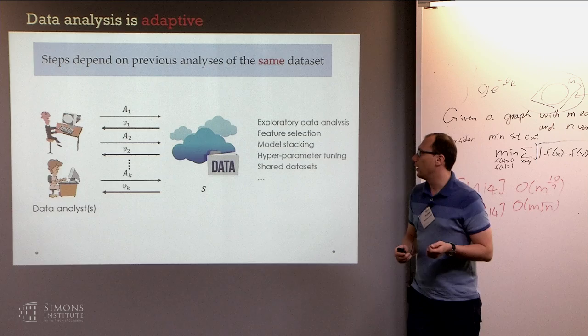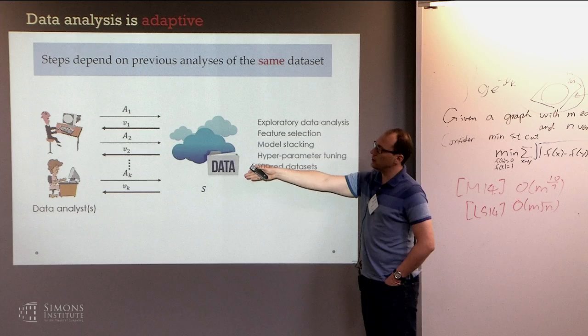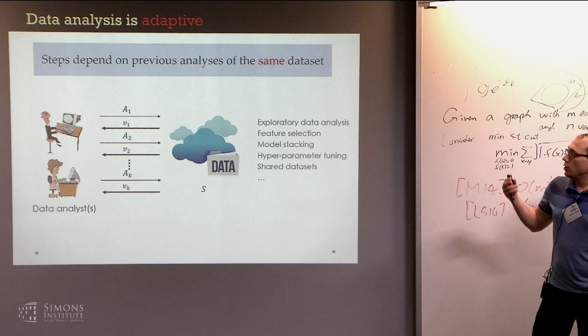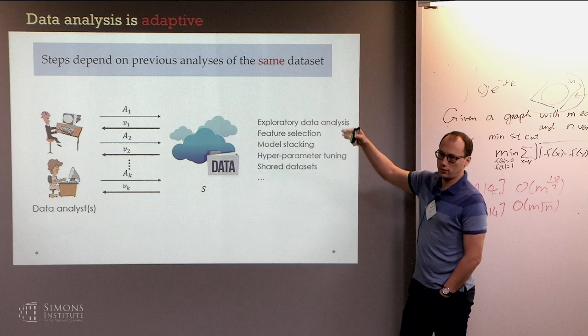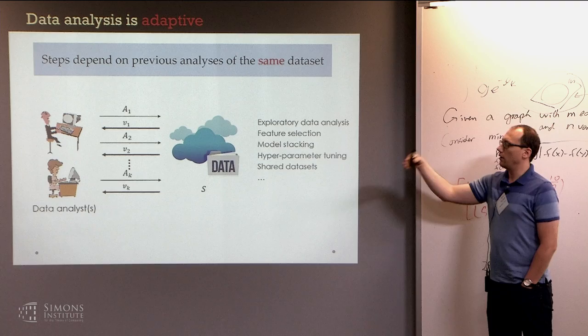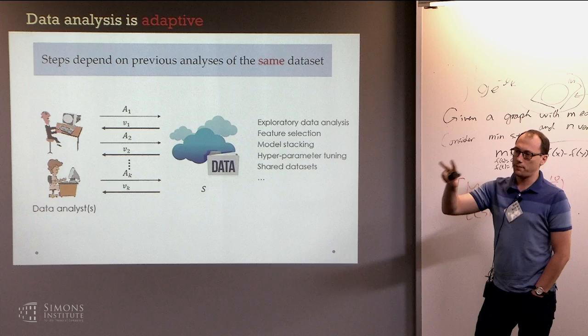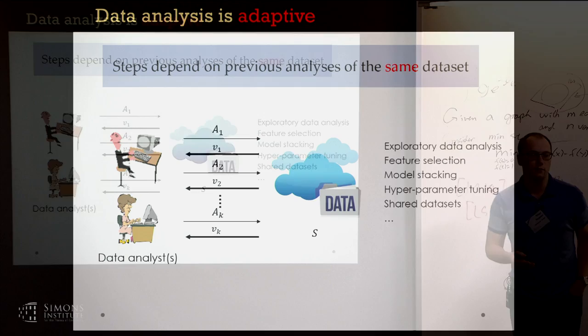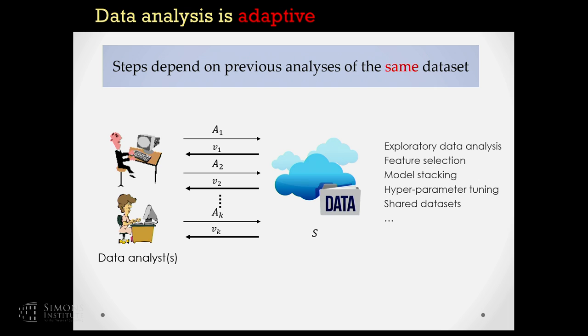It is natural to ask whether we can still prove something meaningful about this whole procedure even though our assumptions no longer hold. If we had unlimited data, we could do conservative data splitting — split our dataset into k different chunks and run each analysis on a separate fresh set. This would avoid all problems caused by dependencies. But in practice, data is never unlimited and is still often very expensive, so the question is: can we do better than this conservative approach?